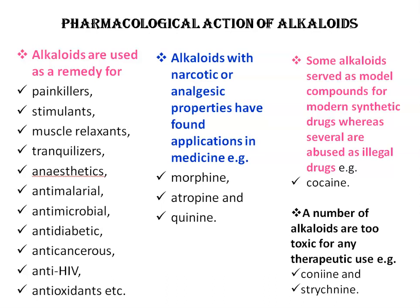A number of alkaloids are too toxic for any therapeutic use — for example, coniine and strychnine. If you remember the Greek philosopher Socrates, he died in 399 BC by consumption of this alkaloid, coniine, contained in hemlock, which is from the plant Conium maculatum.